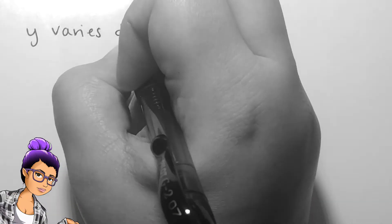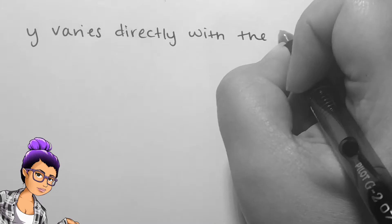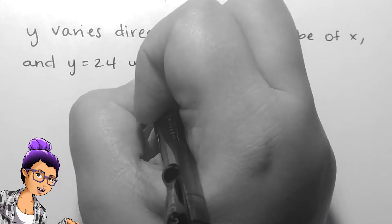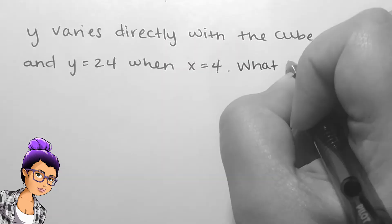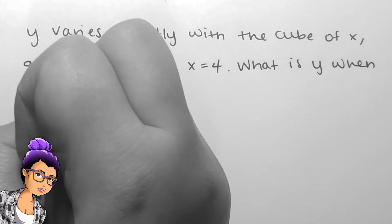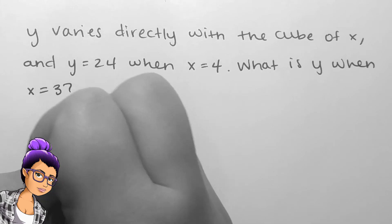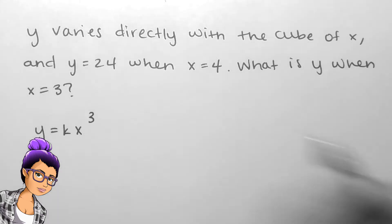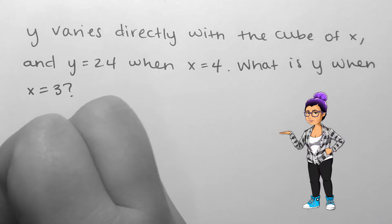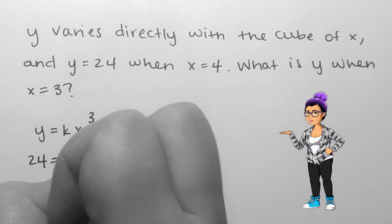If y varies directly with the cube of x and y equals 24 when x equals 4, then what is y when x equals 3? We first write our direct variation as y equals k times x cubed. Unless told otherwise, we'll use k for the constant of variation.